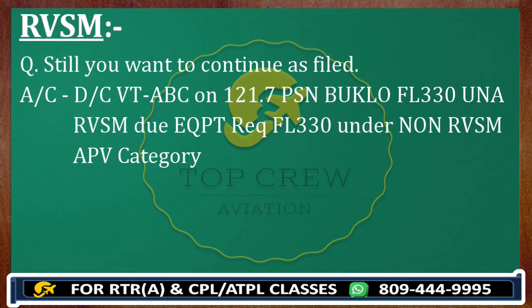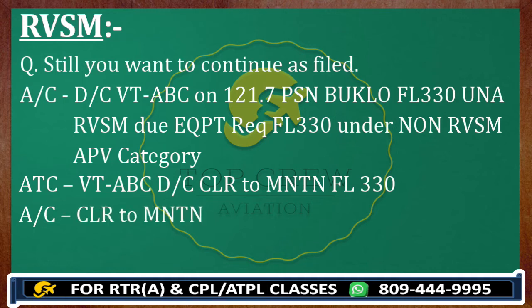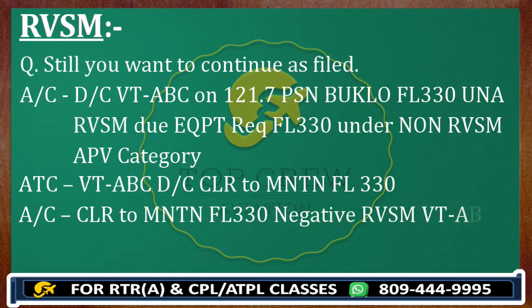ATC responds: 'Victor Tango Alpha Bravo Charlie, Delhi Control, clear to maintain flight level 330.' Since you are not complying with RVSM conditions, your readback is: 'Clear to maintain flight level 330, negative RVSM, Victor Tango Alpha Bravo Charlie.'